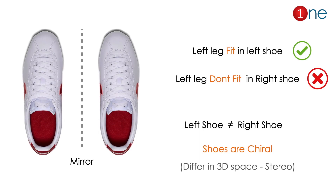Chirality will be a wonderful thing you might have felt without knowing what chirality is. Let us understand it by shoe. You might wonder why the left shoe doesn't fit the right foot. Same way, the right shoe doesn't fit the left foot — because they are three-dimensionally different. Left shoe is not equal to right shoe in terms of space. That 3D space is called Stereo, and the chemistry is stereochemistry. Technically, they are called chiral. Most of the time they are mirror images of each other.